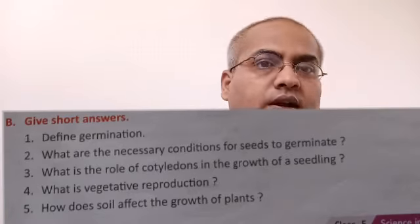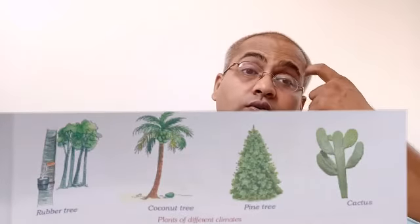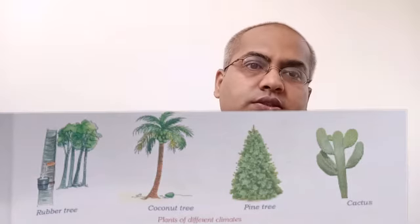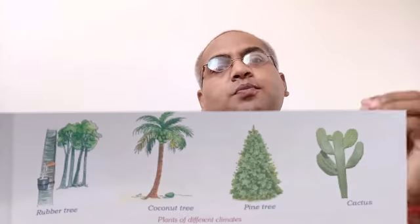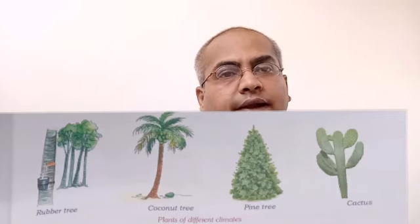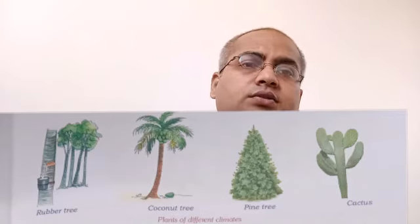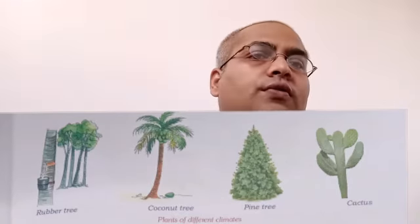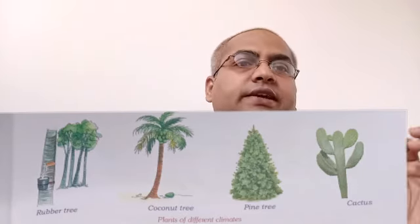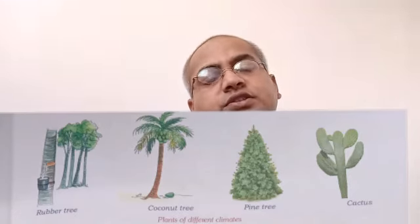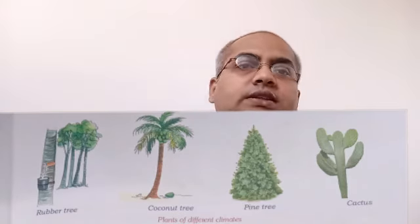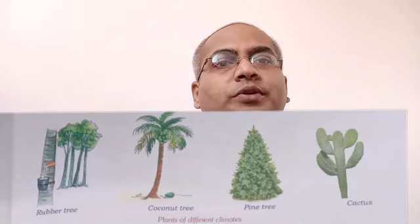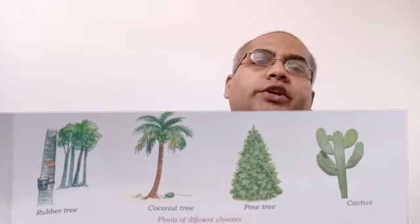Question five: how does soil affect the growth of plants? Different plants need different types of minerals and different amounts of water to grow well, so the soil must support the plant. For example, rice plants need a lot of water, so the soil must have the capacity to absorb a lot of water and maintain moisture — clay and loamy soil is good for rice.